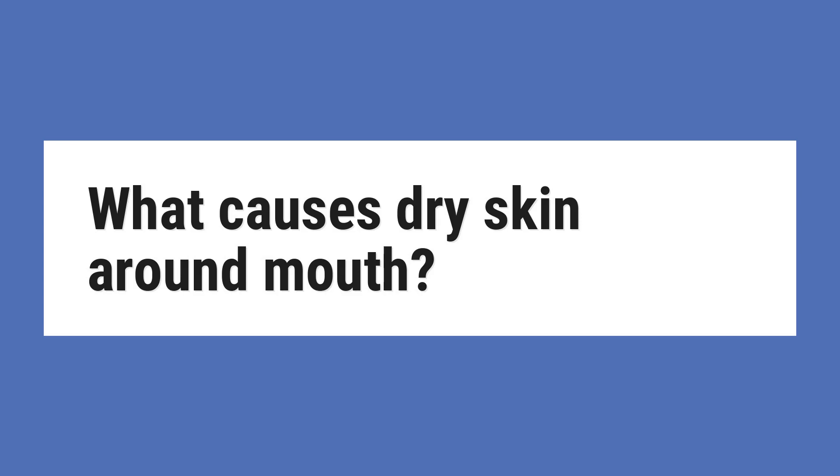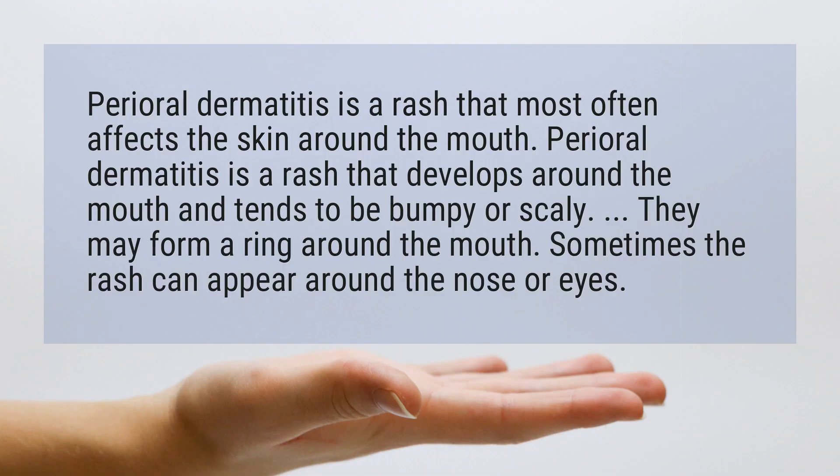What causes dry skin around mouth? Perioral dermatitis is a rash that develops around the mouth and tends to be bumpy or scaly. The bumps may form a ring around the mouth. Sometimes the rash can also appear around the nose or eyes.